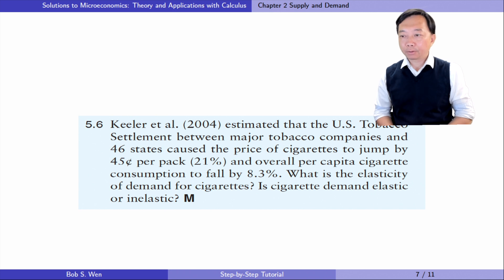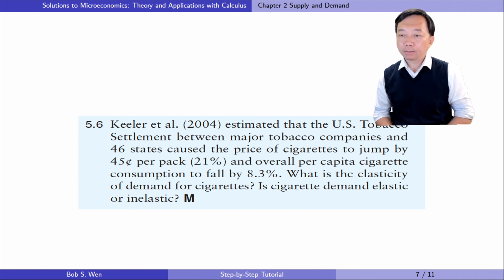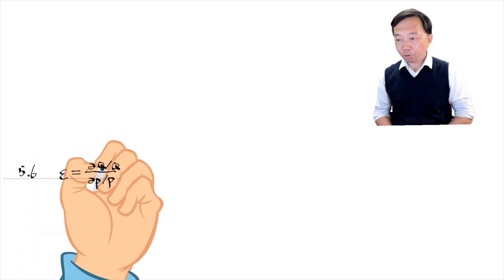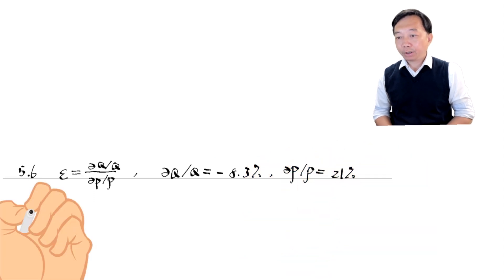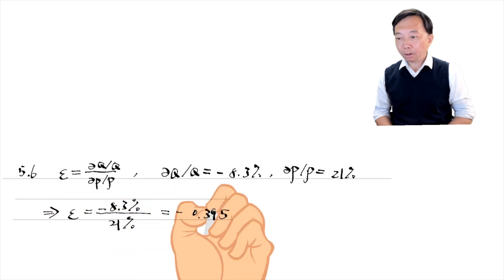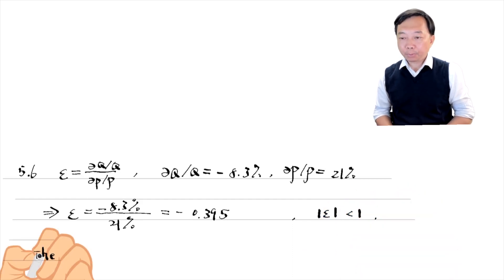Let's solve exercise 5.6. The US tobacco settlement between major tobacco companies and 46 states caused the price of cigarettes to jump by 21% and the overall per capita cigarette consumption to fall by 8.3%. What is the elasticity of demand for cigarettes? Is cigarette demand elastic or inelastic? We first write down the definition of the price elasticity of demand epsilon. We can calculate epsilon, which is minus 0.395. It is less than 1 in absolute value, so the cigarette demand is price inelastic.